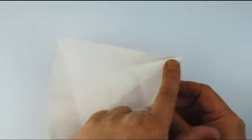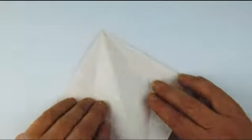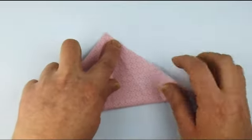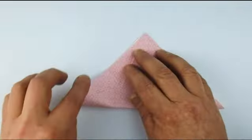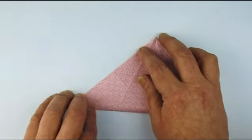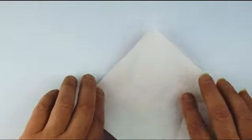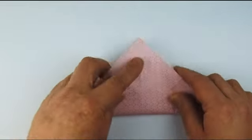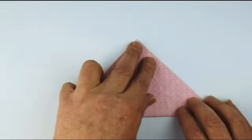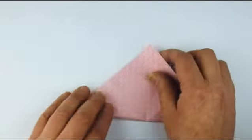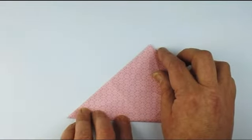Now we're going to change this section of the diagonal into a valley on both sides. So just the outside, leaving the inside as a mountain. Same again, just that section and that section.